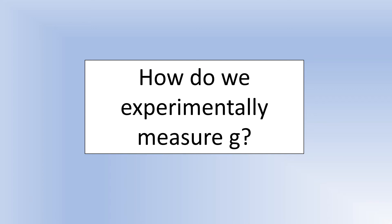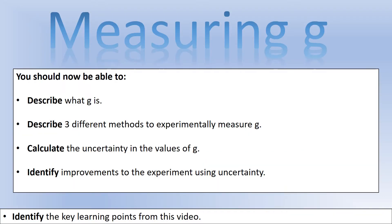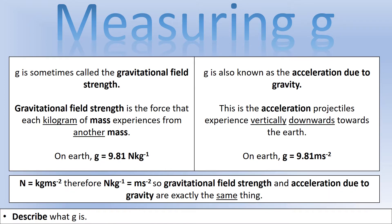In this video we're going to look at how we can actually measure the value of G using an experiment. We'll look at what G is and three different ways we could go about measuring it, examining them in terms of uncertainty to see which one is the best method.